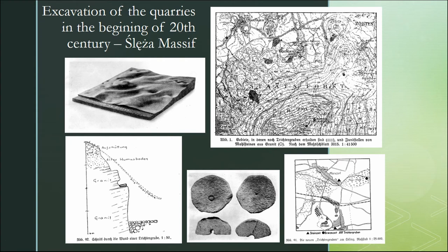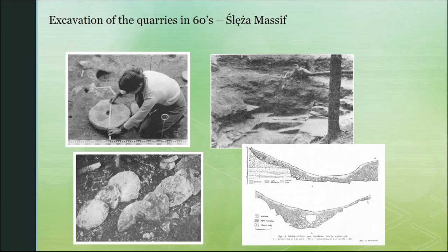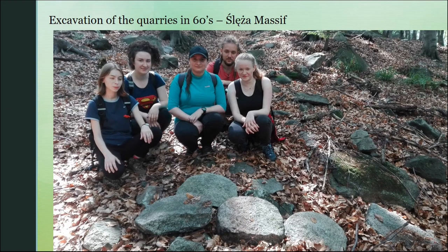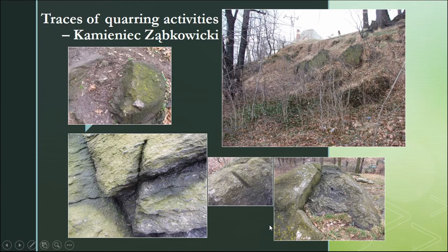They also discovered an early medieval workshop where quernstones made from local rock received their final cut. This research was continued by Polish archaeologists in the 1960s. Additional quarries were excavated, and nowadays we still have some half-finished products visible on the northern slopes of the Ślęża Massif. Another trace of quarrying activity was found in Kamieniec Ząbkowickie, where an escarpment quarry was observed.